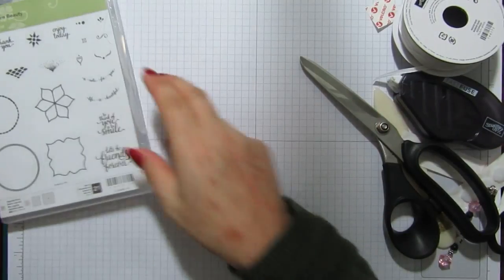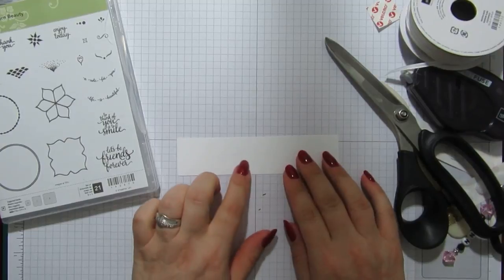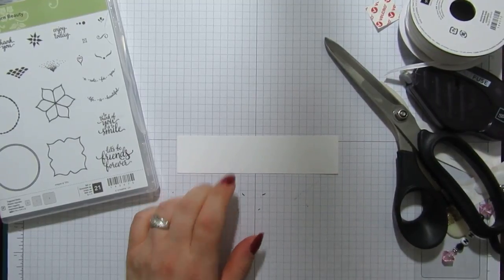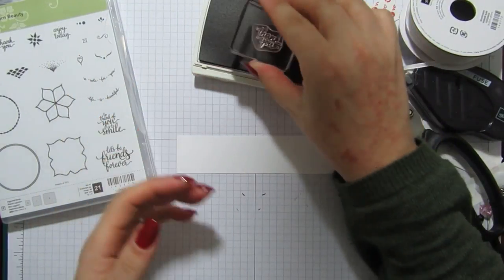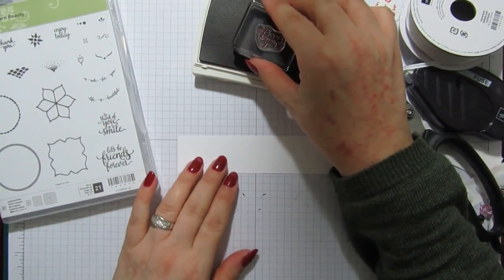And then I've got the stamp set which is Eastern Beauty and I'm going to use the little thank you there. And I'm just going to stamp it onto some scrap whisper white with some berry burst ink. Let's just ink that up.